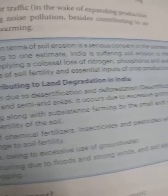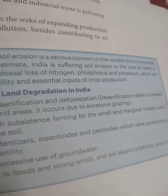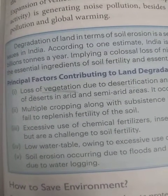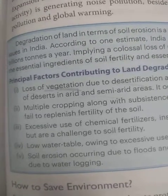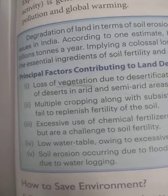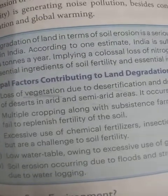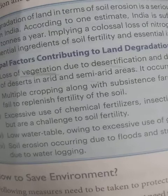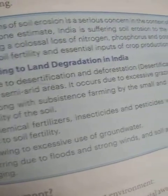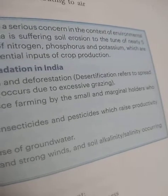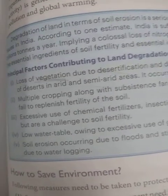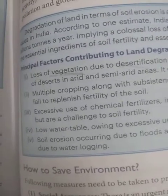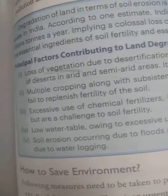Excessive use of chemical fertilizers, insecticides, and pesticides raises productivity but is a challenge to soil fertility — productivity increases but the soil's fertility is completely damaged. Low water table, owing to excessive use of groundwater, is a hazard. Soil erosion occurring due to floods and strong winds, and soil alkalinity and salinity occurring due to waterlogging, are also major issues that are beyond control.